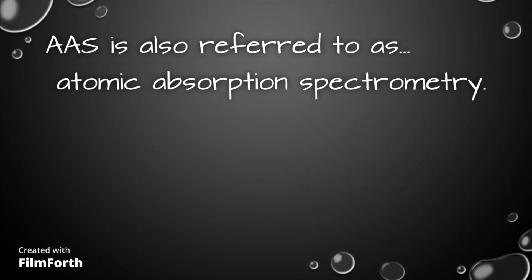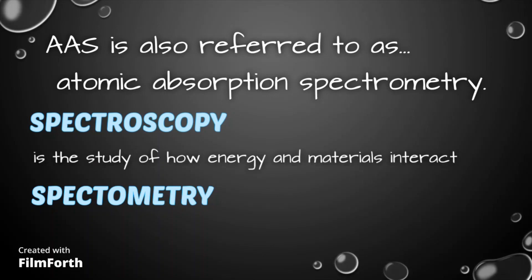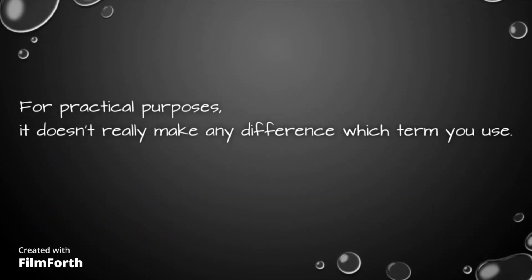Take note that AAS is also referred to as Atomic Absorption Spectrometry. The difference between spectroscopy and spectrometry is that spectroscopy is the study of how energy and material interact, while spectrometry refers to how you apply this as a measurement technique. For practical purposes, it doesn't really make any difference which term you use.